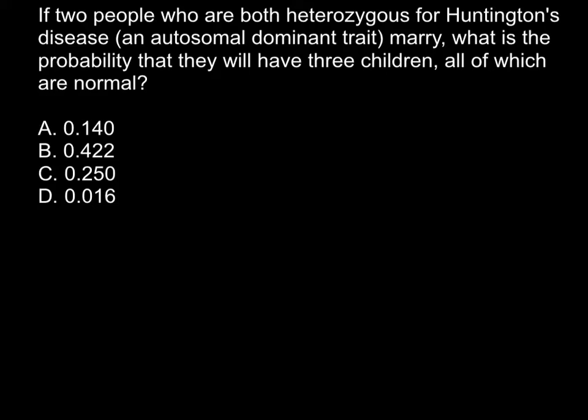And here is a problem. If two people who are both heterozygous for Huntington's disease, an autosomal dominant trait, marry, what is the probability that they will have three children, all of which are normal?